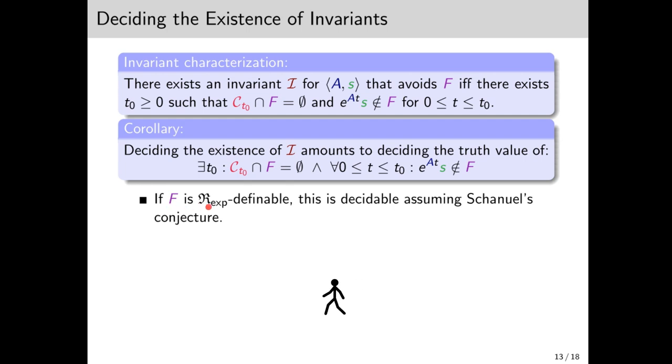Well, if F is Rx definable, then this is decidable assuming Chaniel's conjecture. It's a conjecture in transcendental number theory, which I will not go into. It's fair to rely on this conjecture, since the decidability of Rx relies on it. We remark, however, that it's still not completely trivial, since the tail is not definable even in Rx, so there is some work there.